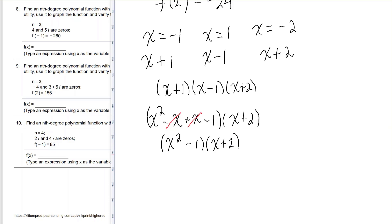So I'll end up with x squared minus 1 times x plus 2. Now if I continue to multiply, distribute x squared first, and then minus 1, I get x cubed plus 2x squared minus x minus 2. And that's the third degree polynomial function.